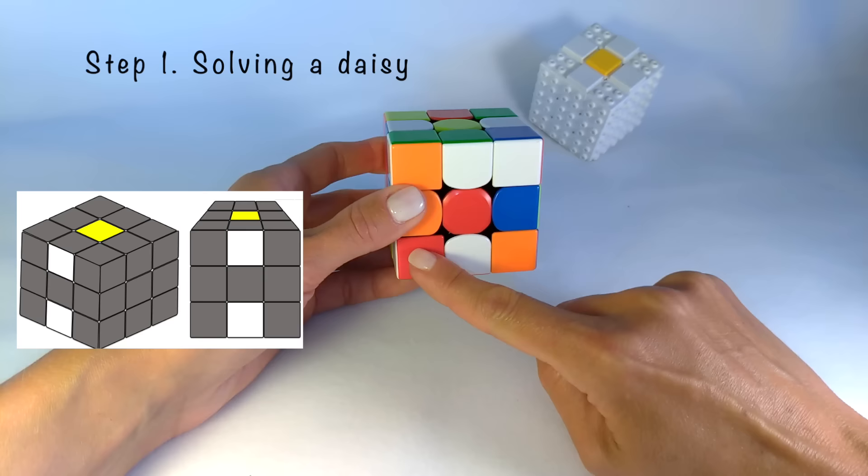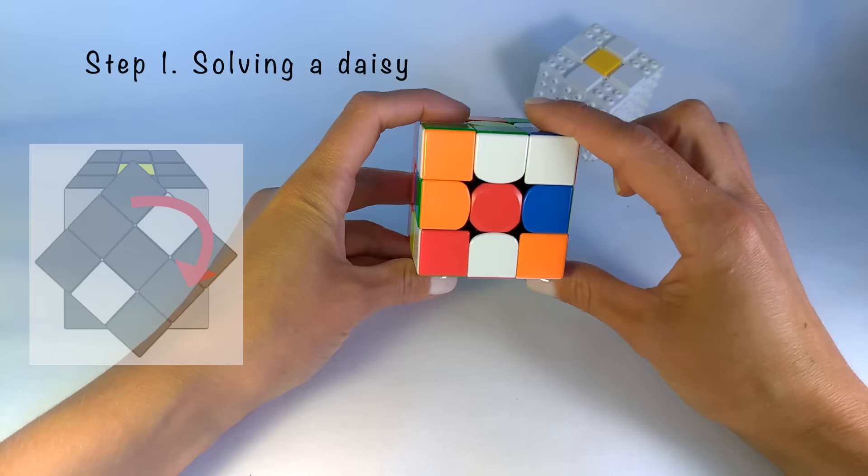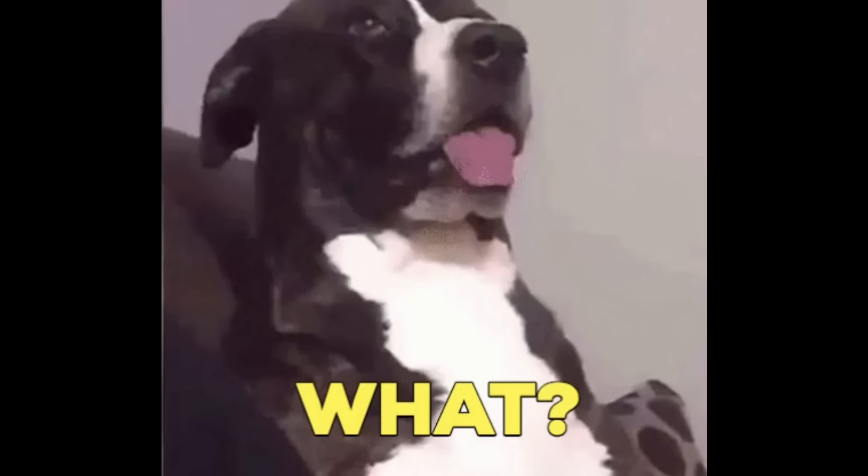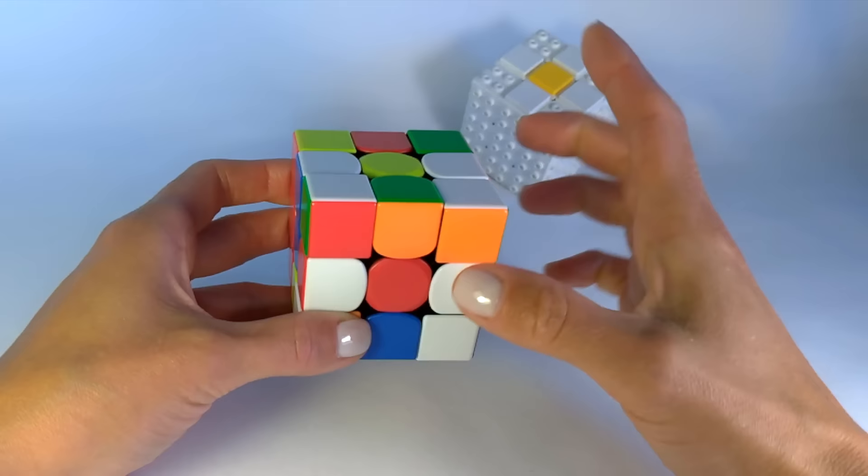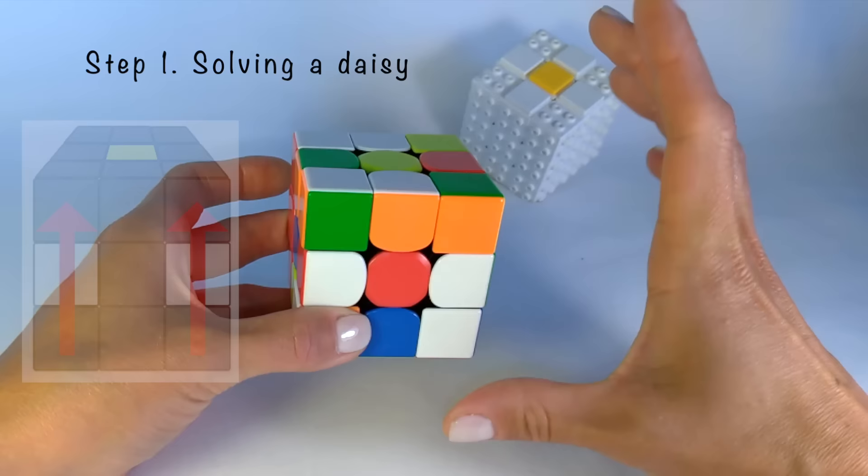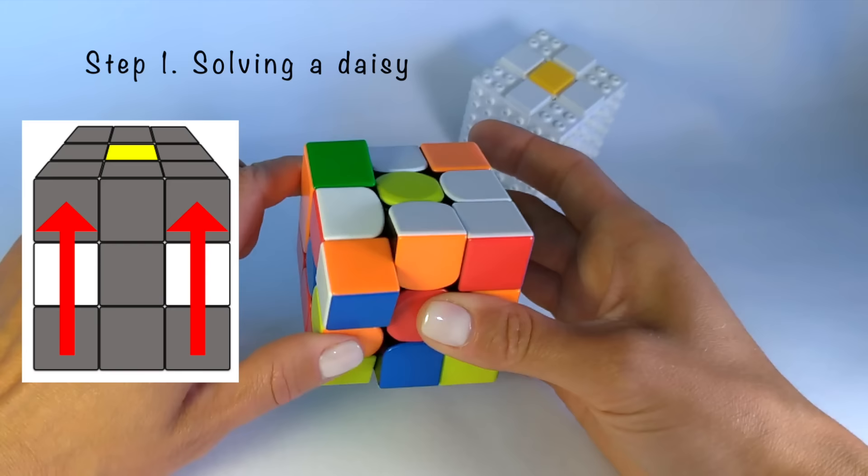The second situation when the white edge is on the bottom layer or is on the top layer. I am going to do the next move. Turn the front side clockwise. Now the edges are on the middle layer and we already know what to do. But as you can see, these places are taken. We need to free the spot because there are already white edges. The top layer turn left. There are no more white edges on the top and we can easily move edges from the middle layer up. The right side up and the left side up too.